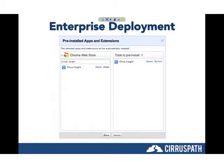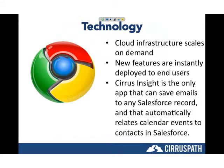For large enterprises, there's also the option to do automatic deployment through Chrome across your entire organization — you can push Cirrus Insight out to all of your users through Chrome. On the technology side: we're cloud in the truest sense, so we scale on demand. We onboarded a thousand-seat organization last month and didn't even blink. New features and functionality are pushed out automatically — in most cases you don't need to do anything; it'll just update automatically, or at most you'll be prompted to refresh email. We're the only solution that can save emails to any Salesforce record and that automatically relates calendar events to contacts in Salesforce.